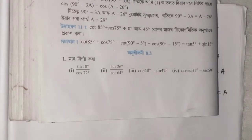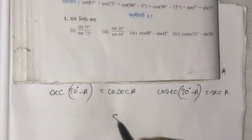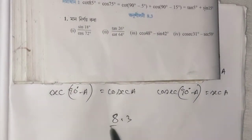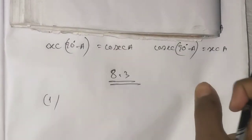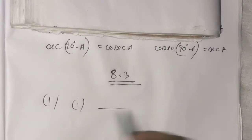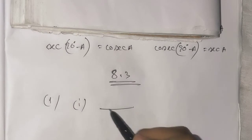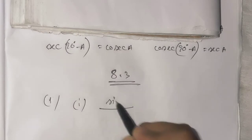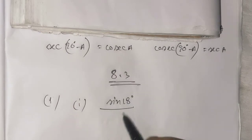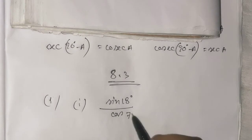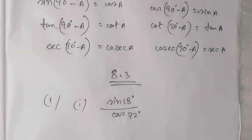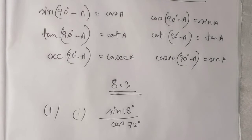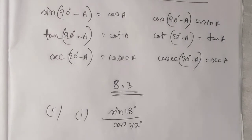Now moving to example number 8.3. The key question is: sin18° divided by cos72°.